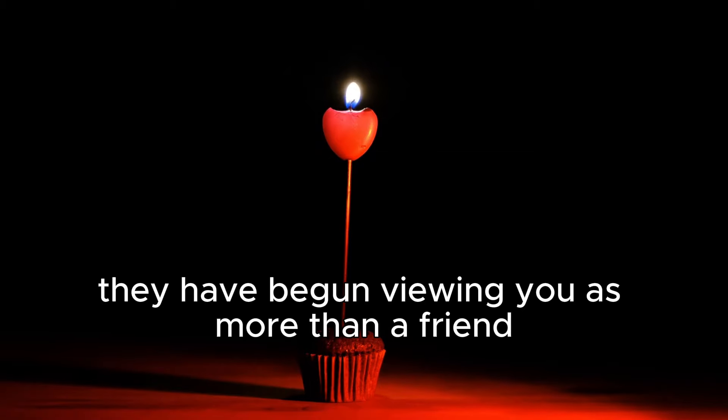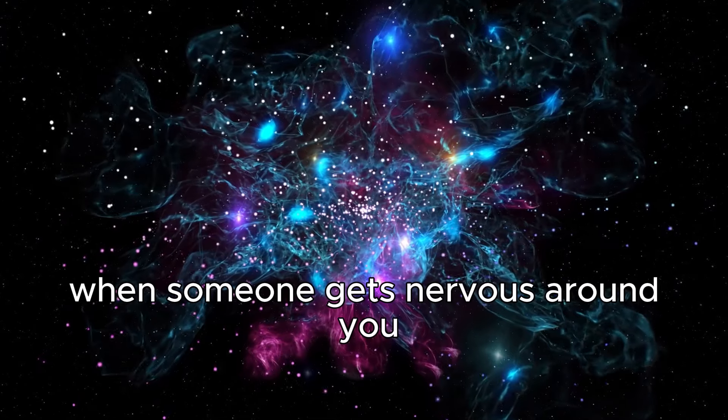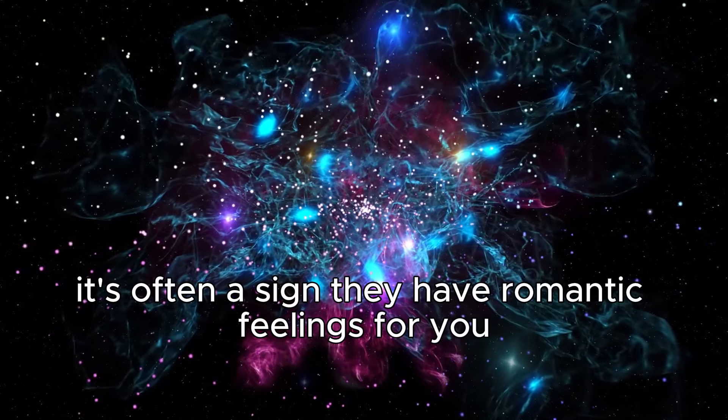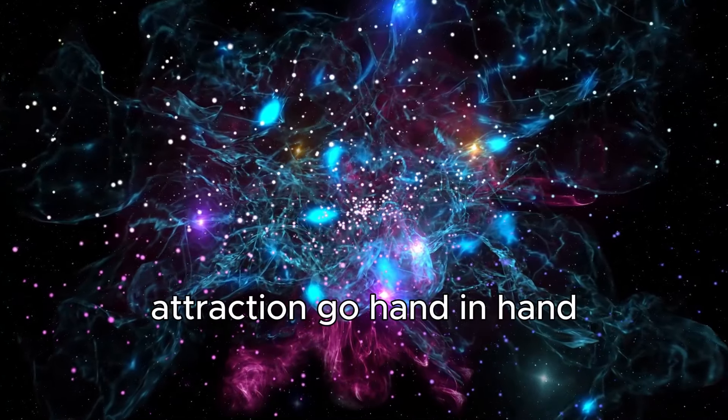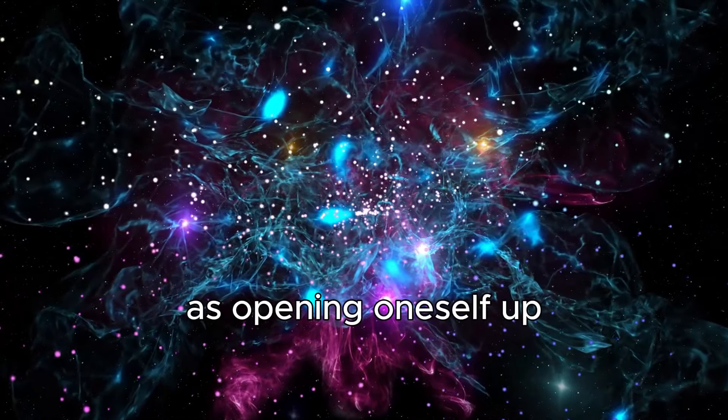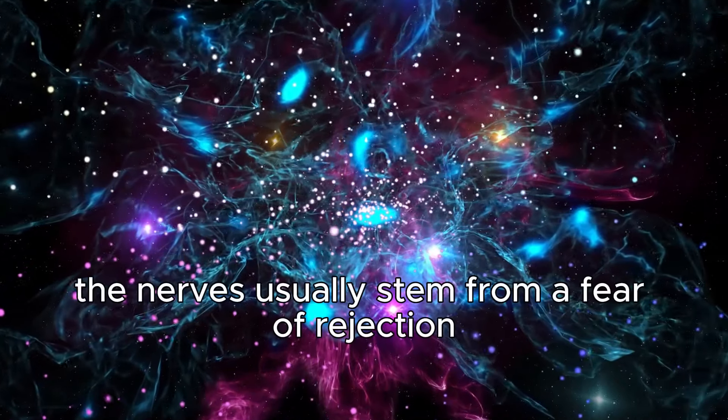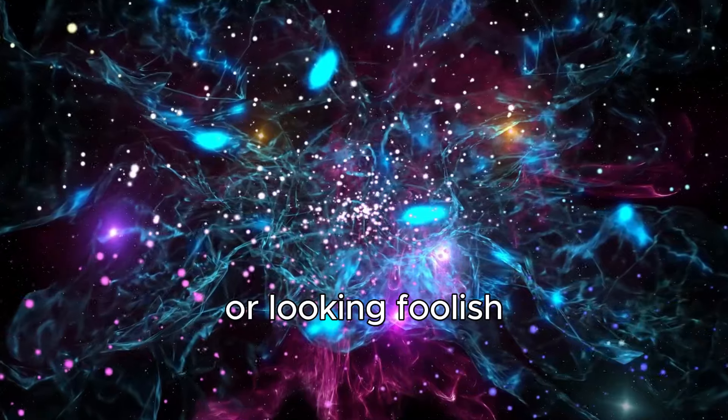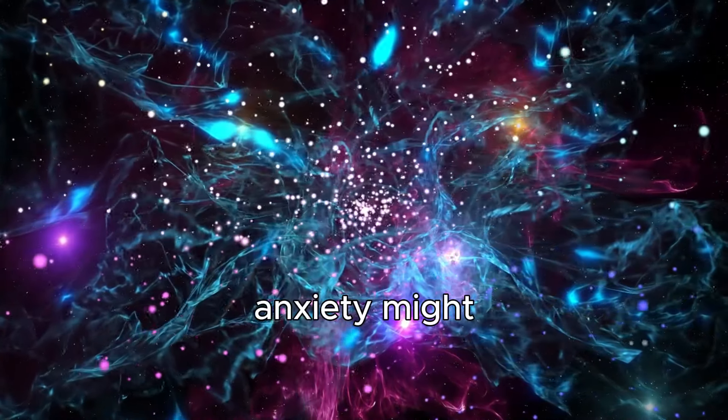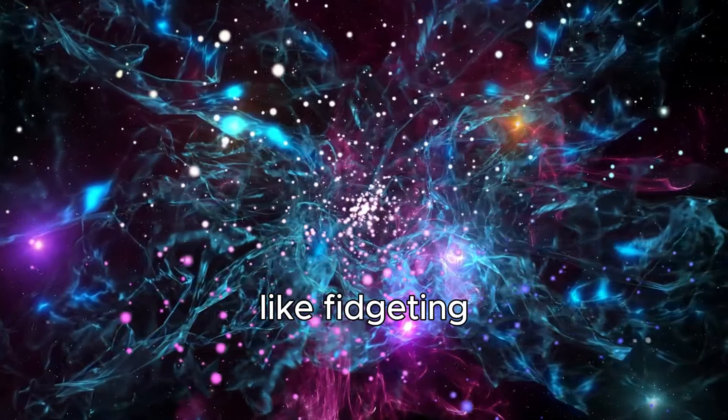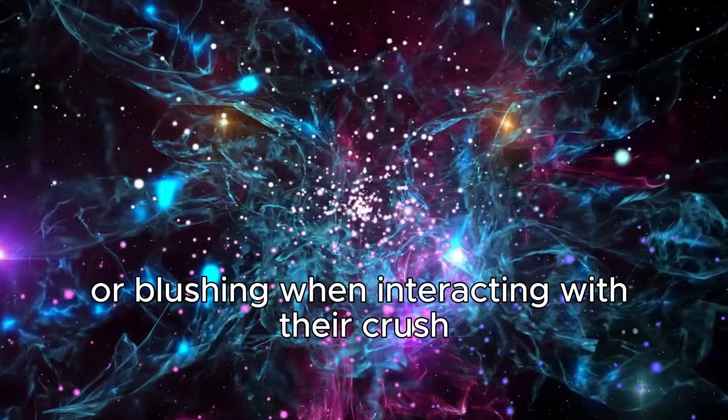Six: They get nervous around you. When someone gets nervous around you, it's often a sign they have romantic feelings for you. Anxiety and attraction go hand in hand, as opening oneself up emotionally to another person can feel scary. The nerves usually stem from a fear of rejection or looking foolish in front of someone they want to impress. Anxiety might manifest in subtle ways like fidgeting, avoiding eye contact, stumbling over words, or blushing.